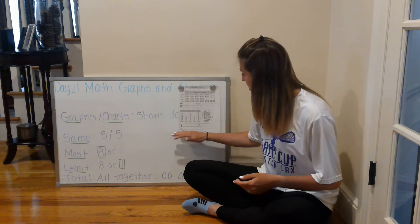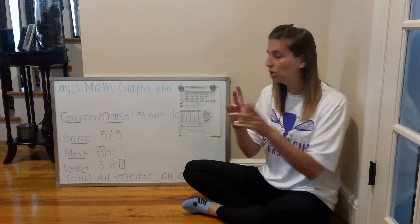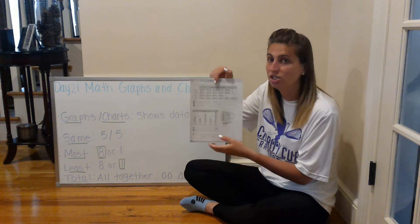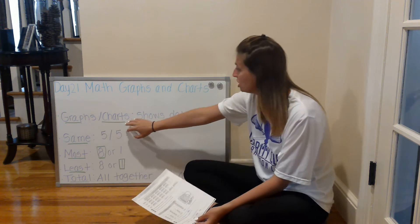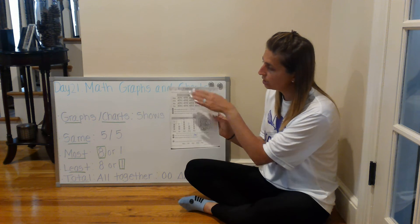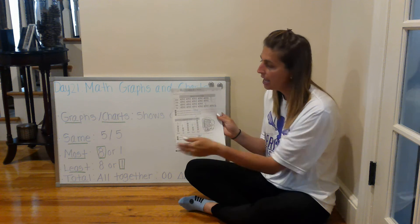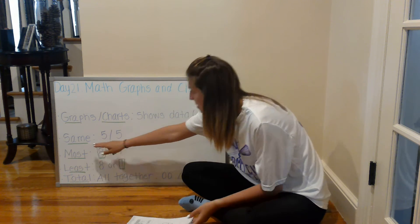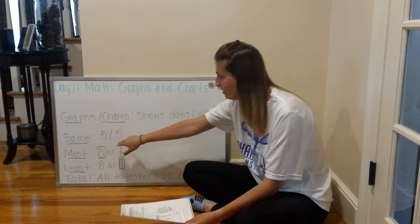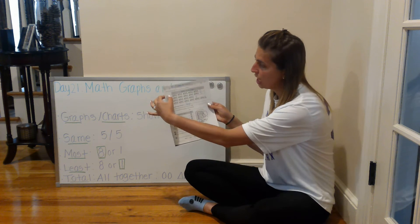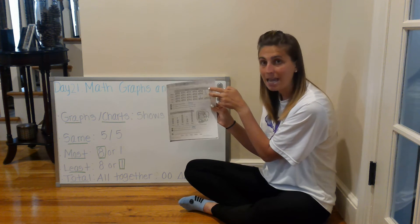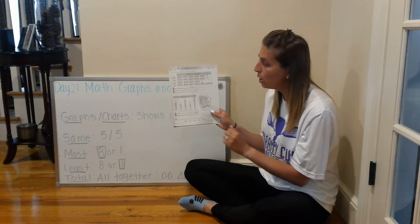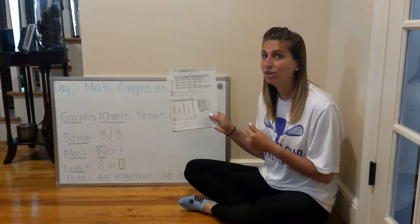Before you complete the rest on your own, let's review our vocabulary words. Graphs and charts show data or information — our first chart shows the number of fishes caught, our second shows hours of computer time. Same means both numbers are equal; for example, five and five is the same. James and Craig both caught five fish. Leo and Erica both had two hours of computer time — the same amount.